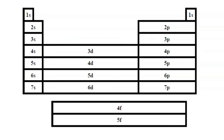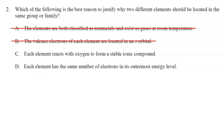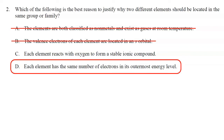Both group 1 (alkali metals) and group 2 (alkaline earth metals) have their valence electrons in s orbitals, yet they react differently because they're in separate groups. We're looking for the reason why elements in the same group react in similar ways. The answer has to do with valence electrons, so the correct answer is D: each element has the same number of valence electrons in its outermost energy level.